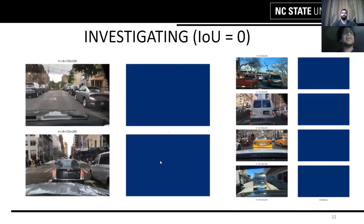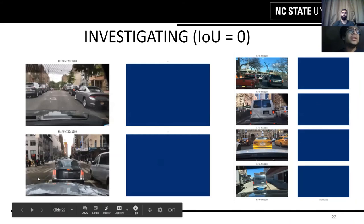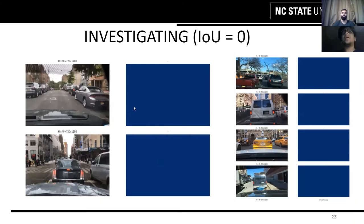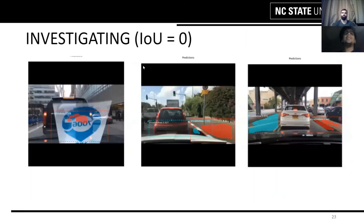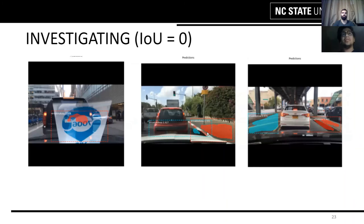Upon investigating, we found some problems with the ground truth. For example, these two images clearly have drivable areas, but the annotations were incorrect. The areas where our model struggled most were cases of occlusion on the windshield, and it consistently identified pavements as drivable area, likely due to a lack of pavement examples in our training dataset. Roads that were not drivable but visually resembled roads were also problematic.